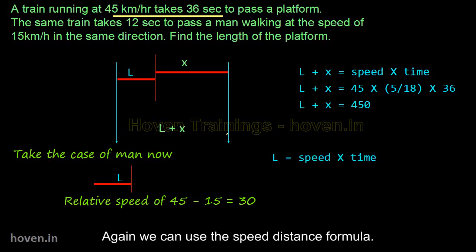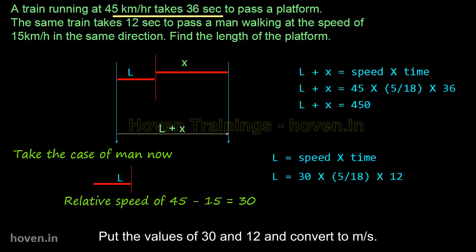Again, we can use the speed and distance formula. Put the values of 30 and 12 and convert to meters per second. We get L equal to 100 meters.